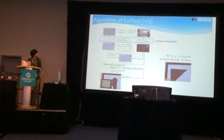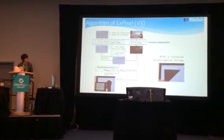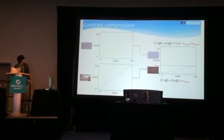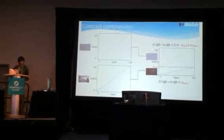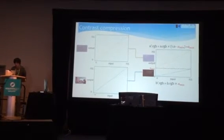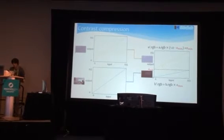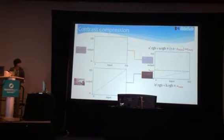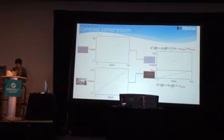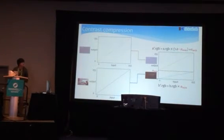Now I'll talk about the algorithm of XPixel. It consists of three steps. The first step is contrast compression: we compress two images' contrasts to fit within the 0-to-255 pixel color depth range. We have a parameter we call the range ratio. By adjusting this parameter, we can make the hidden image brighter or darker, and the naked image darker or brighter, changing the sharing ratio of the two images.